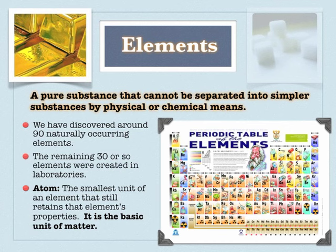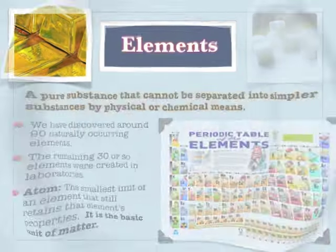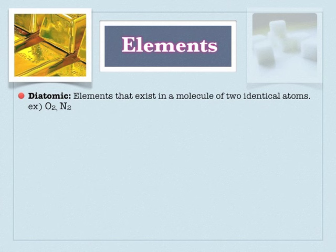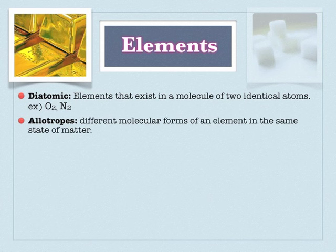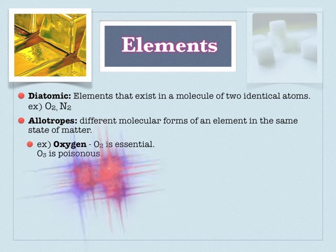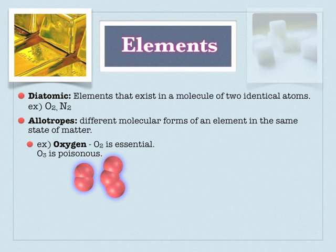The atom is the manifestation of an element — it's the smallest unit of an element that still retains its properties, so you can tease out one atom of gold. Diatomic elements are molecules composed of two identical atoms, like diatomic oxygen and diatomic nitrogen. About 98–99% of what you breathe in are diatomic molecules.